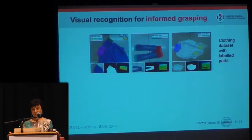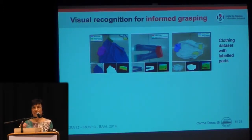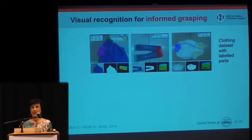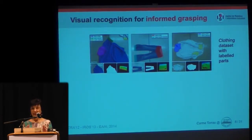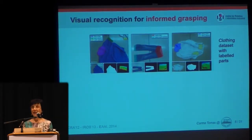We have built a clothing dataset with labeled parts. Informed grasping requires grasping by a given part, for instance the collar, in order to hang a garment. We have a dataset in which we have labeled the collars, the hips and the hemlines of pants, and the cuffs of the sleeves of shirts. For each clothing item, we have not just the annotated color image, but also a template for background subtraction and a depth image. This is publicly available on our website.